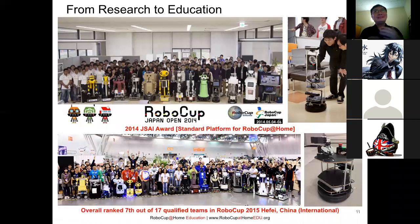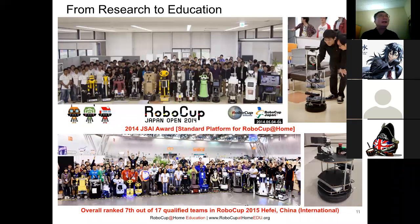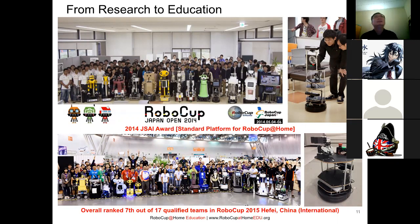I want to talk about how I actually started and got the idea to bring this into education. Everything starts from research. My background is in robotics research — I research on intelligent robots, and now it's about AI robotics. Competition is a good way to test how good our research work is, so I always wanted to join robotics competitions. I call this journey 'From Research to Education.'